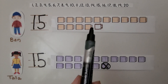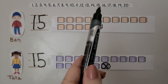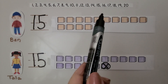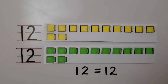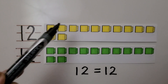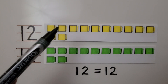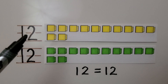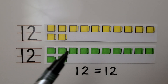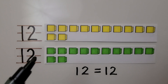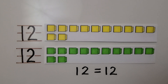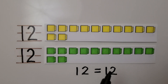When we look at the numbers: one more than 14 is 15, and one less than 16 is 15. Here there are 10 yellow cubes and 2 yellow cubes — 10 ones and 2 ones is 12. Here we have 10 green cubes and 2 green cubes — 10 ones and 2 ones is 12. When the numbers are the same, they are equal. 12 is the same as 12. 12 is equal to 12.